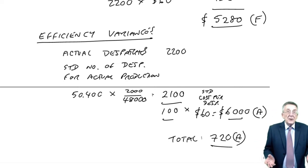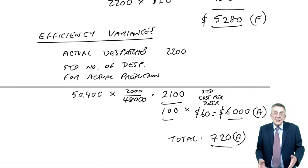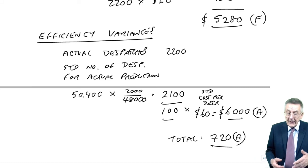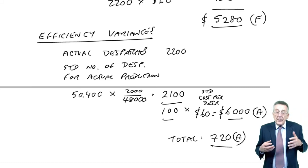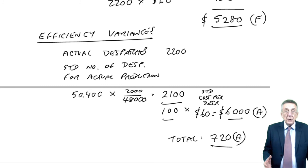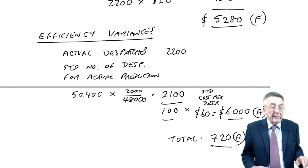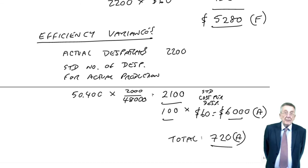And so there we are. It's just the same as labor, except it's per dispatch instead of per hour. It's the same as materials - expenditure and usage. But instead of per kilo, it's per dispatch. So there's not really anything new. As I said before, if you understand what's happening with variances, then there's not really much excuse for not being able to solve these problems.